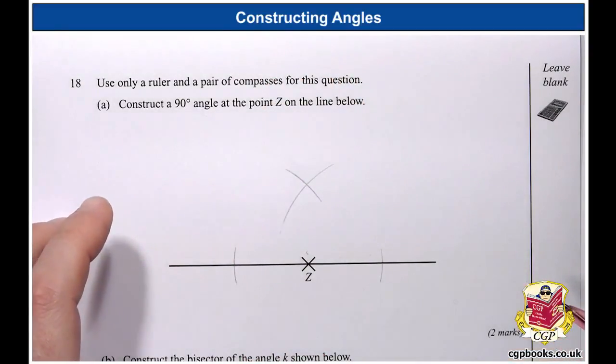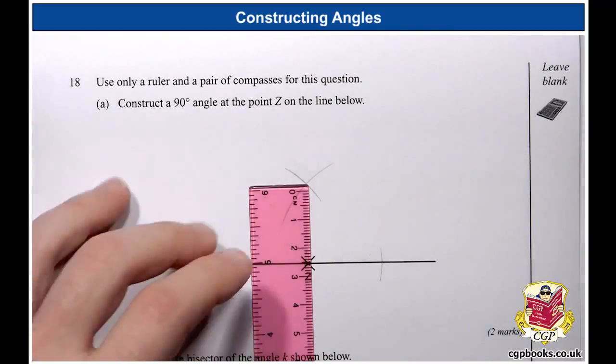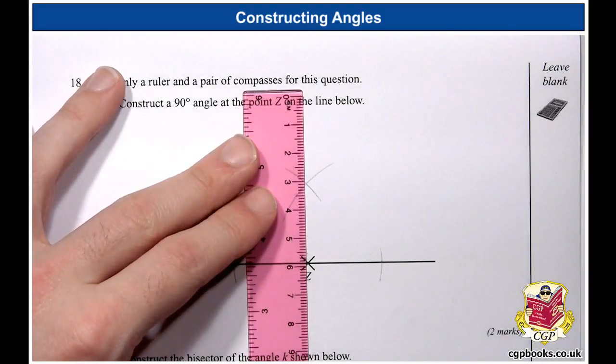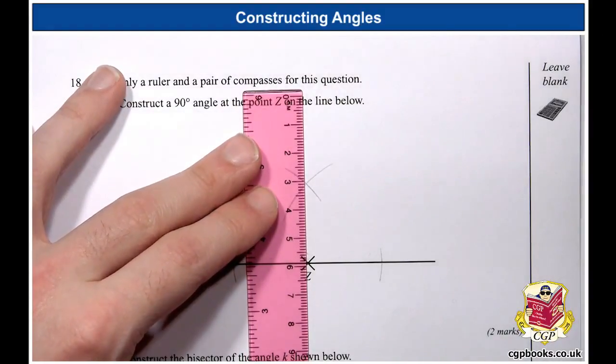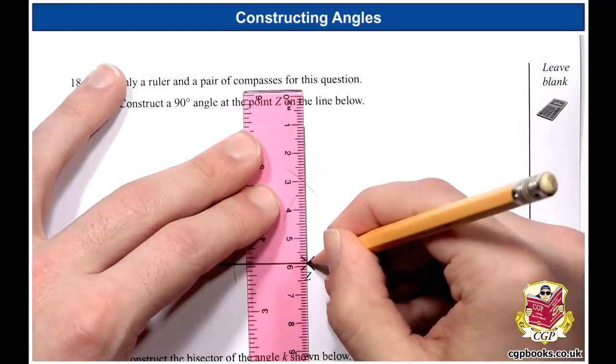So now I've got a cross there where two arcs cross. So now what I can do is I can take my ruler, which again is a beautiful shade of pink, and place it down so that my cross lines up with the point Z. And then I just need to draw the line in. And there we go.